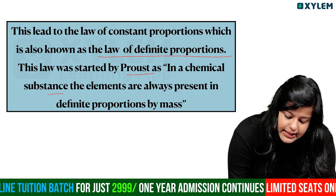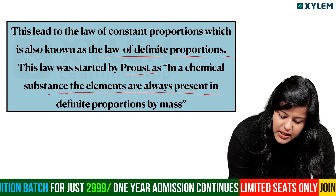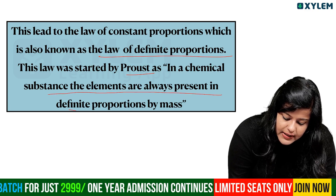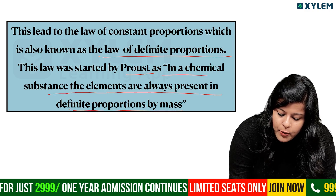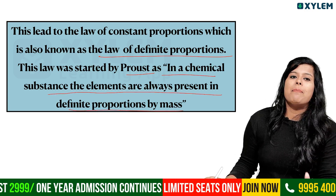In a chemical substance, the elements are always present in a definite proportion by mass. This means the ratio of elements in one chemical substance is always constant.